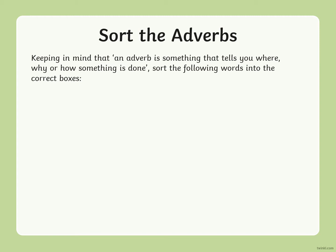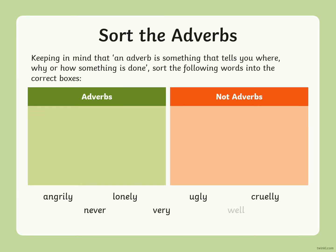Now we're going to sort some words, keeping in mind that an adverb tells you where, why, or how something is done. Sort the following words into the correct boxes — adverbs and not adverbs. The words are: angrily, lonely, friendly, very, ugly, well, cruelly, and bully. Notice there are lots of -ly words, but three that are not -ly words.